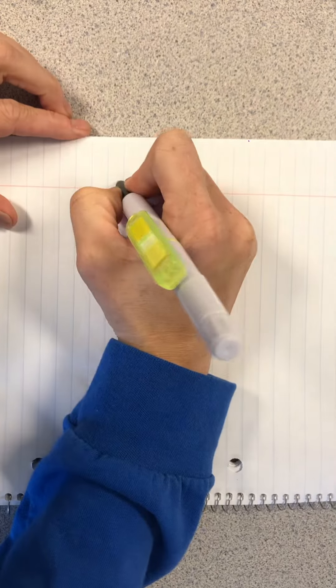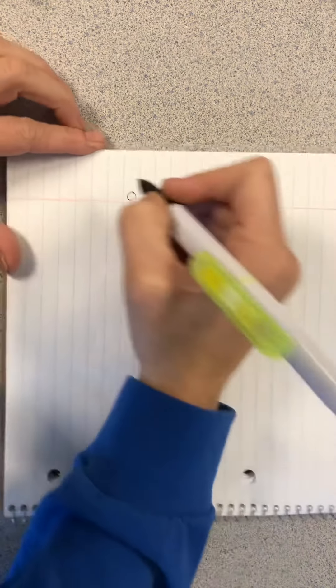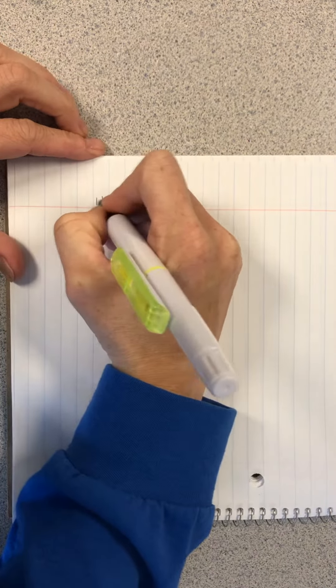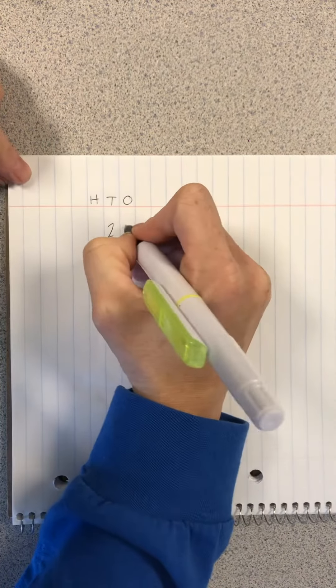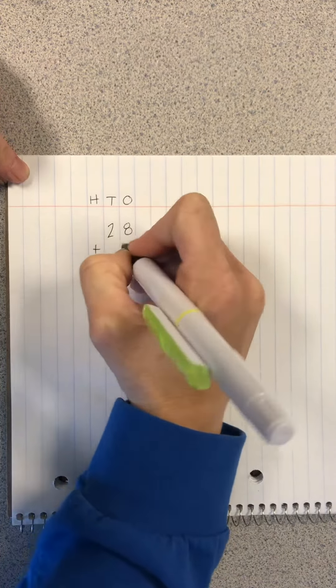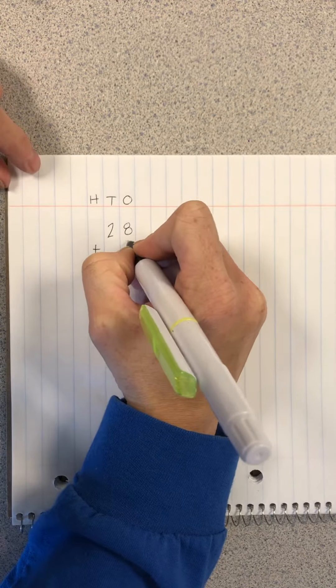So this would be like your ones, and this would be like your tens, hundreds, and you could keep going. So let's add the numbers 28 plus 5.